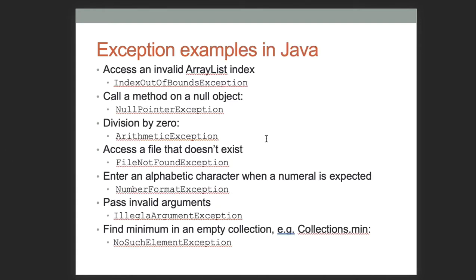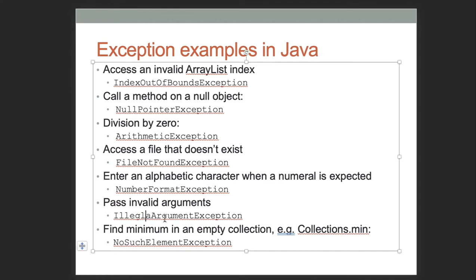Some exceptions we'll see in Java: if you try to access an ArrayList index that doesn't exist, you get IndexOutOfBoundsException. Calling a method on a null object gives NullPointerException. Dividing by zero gives ArithmeticException. Accessing a file that doesn't exist gives FileNotFoundException. NumberFormatException you just saw. IllegalArgumentException you've seen before. Looking for something in an empty collection might give NoSuchElementException. There are hundreds of exceptions in the Java API, and eventually you can learn to make your own.